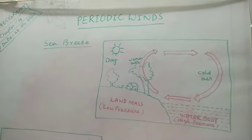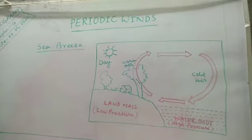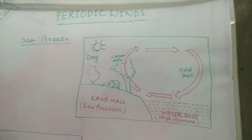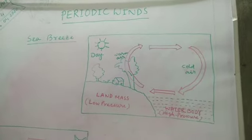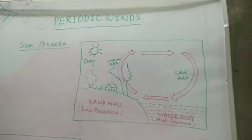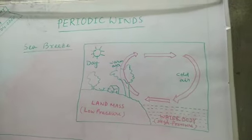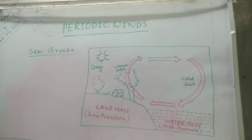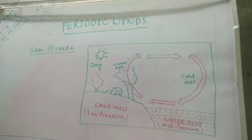Monsoon has mainly two branches: number one, the southwest branch of monsoon, and number two, the northeast branch of monsoon. The southwest branch of monsoon comes to India in the month of June, and the northeast branch of monsoon retreats back from India in the month of October. So it follows a particular time duration or season, that is why it is also considered a periodic wind.